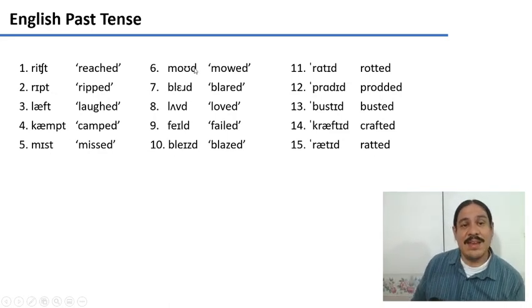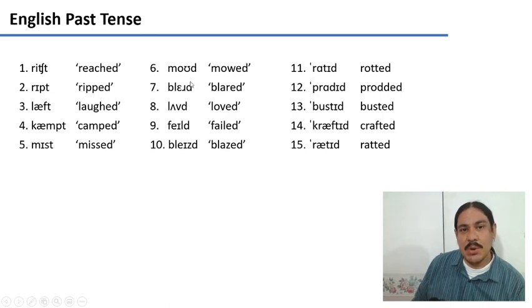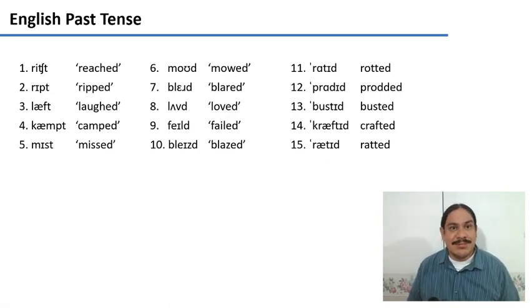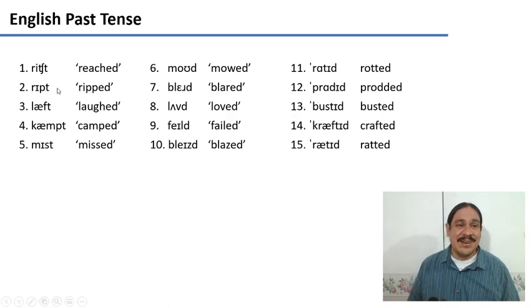Here, we have an allomorph of the past tense that is always a D. Mowed, blared, loved, failed, and blazed. Finally, we have an allomorph of the past tense that always shows up as id, as in rotted, prodded, busted, crafted, and ratted. So, take a moment to look at the data and try to come up with a hypothesis for why sometimes we see a T as the allomorph T, sometimes we see the allomorph D, and sometimes we see the allomorph id. Please pause the video.